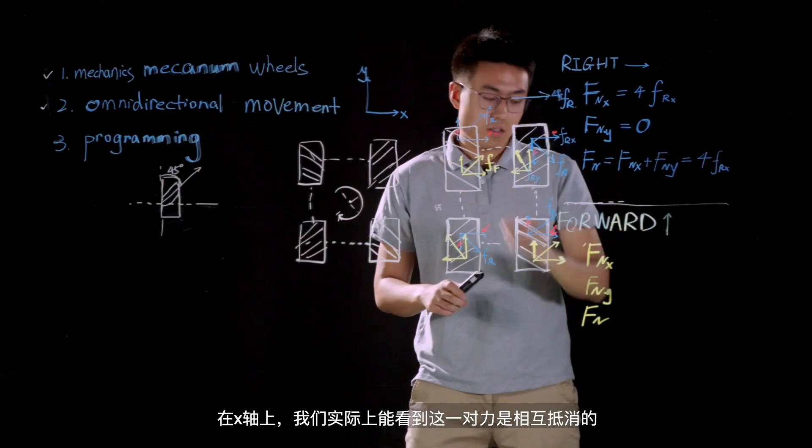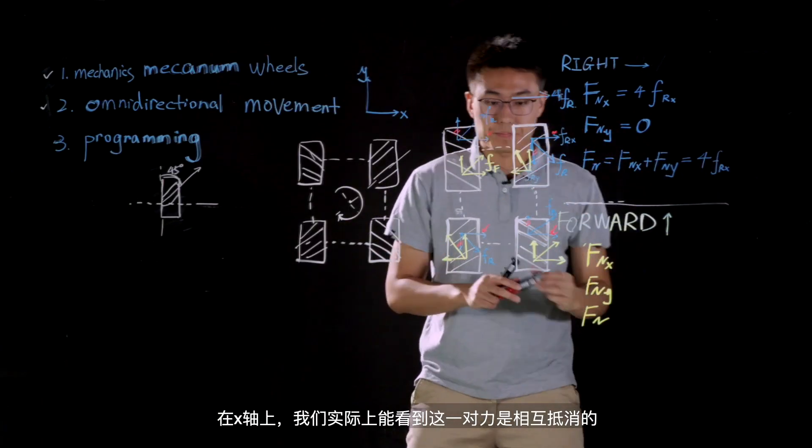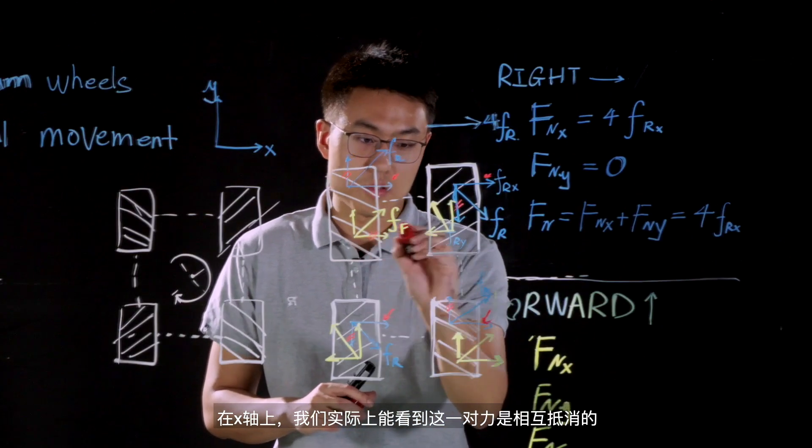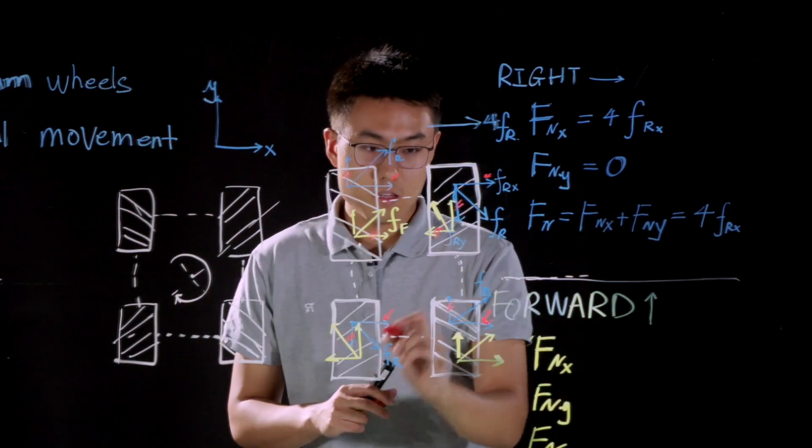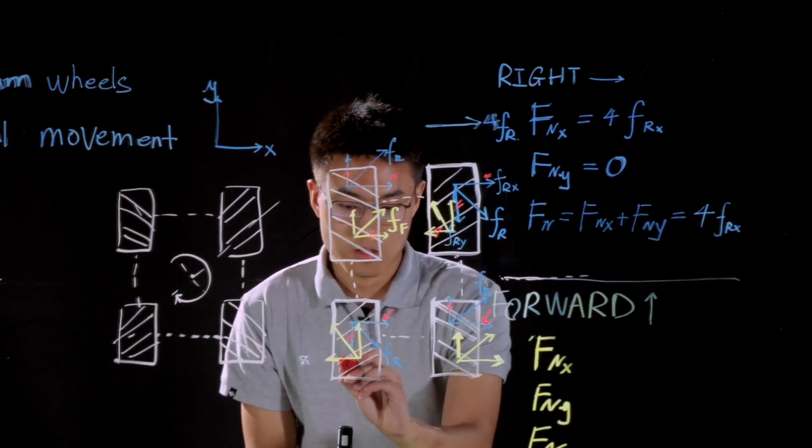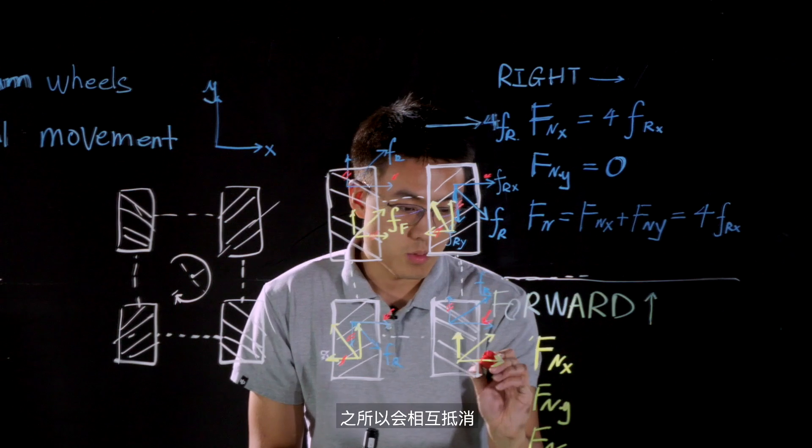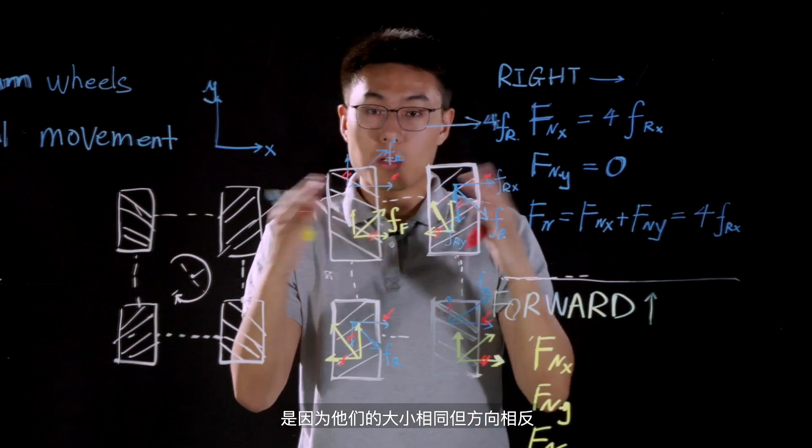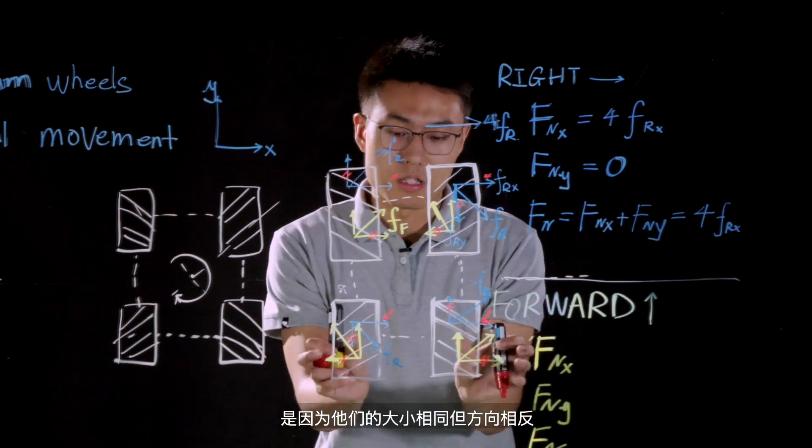The third step is to find the net force on X axis and Y axis respectively. So, on X axis, you can actually see that this pair of forces can be cancelled with each other. And it's the same for this pair of forces. The reason why they can be cancelled with each other is that they have same magnitude but in opposite directions.